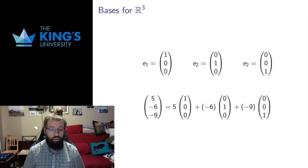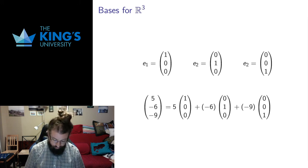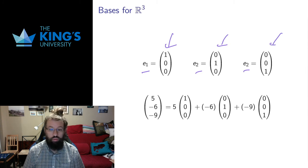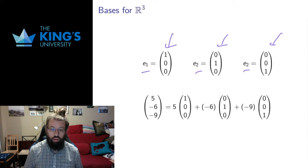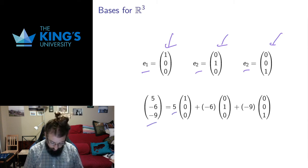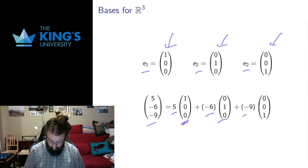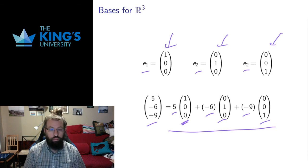Similarly, there are bases for R3 and Rn. The standard basis for R3 is written E1, E2, E3 — the unit vector in the x direction, the unit vector in the y direction, and the unit vector in the z direction. R3 is three-dimensional, the basis has three elements, and there are three axes to move along. For example, the vector (5, -6, -9) can be written as 5·E1 + (-6)·E2 + (-9)·E3 — a linear combination of the basis — and this works for any vector in R3.